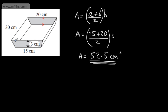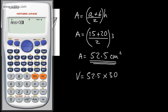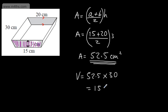Now all I need to do is go ahead and multiply this by the length. So the volume is going to be 52.5 multiplied by 30. Multiplying by 30 gives 1575. So we can say 1575 centimetres cubed. All of these are prisms — constant cross-section multiplied by the length.